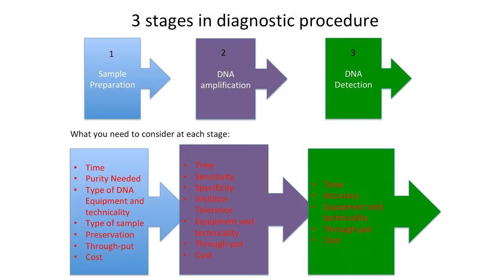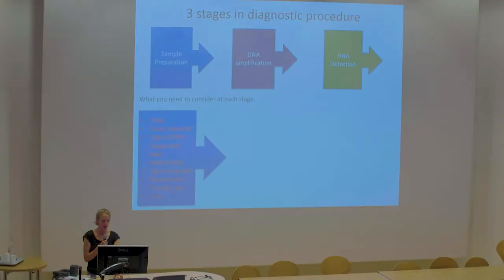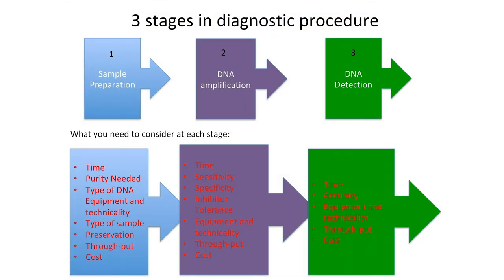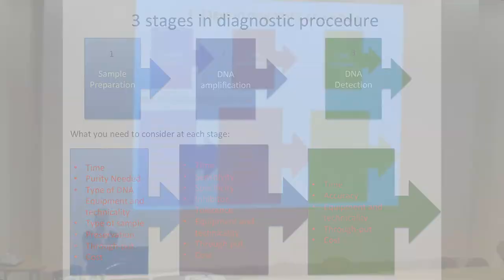At each of those stages we need to think about multiple things: how long does sample prep take, what purity of DNA is needed, what equipment is required, what sample is being used, how the sample is being preserved — for instance, whether it will be in a car for several hours before extraction. We also need to consider throughput, cost, assay running time, whether you can diagnose the patient before they leave, sensitivity, specificity, and any inhibitors in your sample.